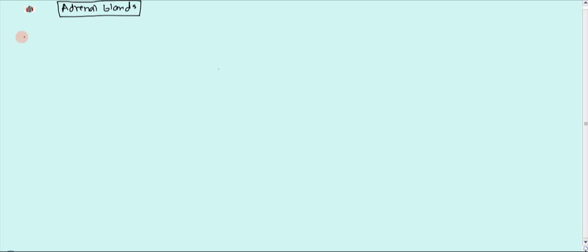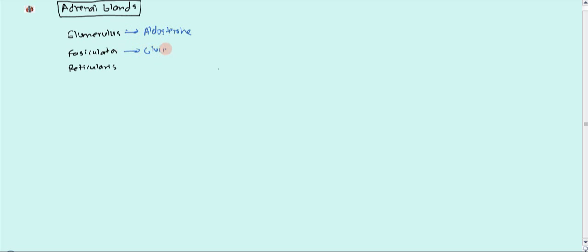The adrenal cortex is broken up into three sections. First, you have the glomerulosa, which is the outermost section. Then you have the fasciculata, and then finally we have the reticularis. Each layer is responsible for secreting a specific type of hormone. The glomerulosa layer secretes aldosterone, the fasciculata layer secretes glucocorticoids such as cortisol, and the reticularis is going to be secreting androgens.